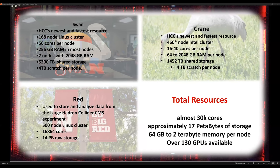Quick information about our different clusters: RED is used to store and analyze data from the Large Hadron Collider, with about 500 to 700 nodes, 16-17,000 cores, and 14,000 terabytes of storage. Crane is one of our largest resources, with about 460 nodes, 16 to 40 cores and 64 gigabytes to two terabytes of memory per node, plus about 120 GPUs up to V100. We're working on migrating GPU resources to SWAN, our newest and fastest resource, just launched in the second-to-last week of May.